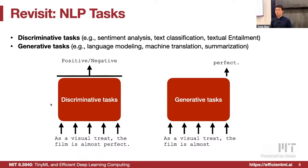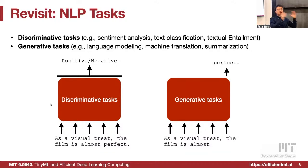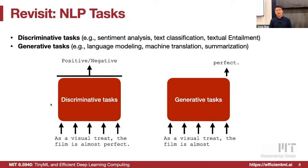Let's first revisit NLP tasks. There are roughly two categories: discriminative tasks and generative tasks. Discriminative tasks take a sentence and produce a classification result, such as sentiment analysis, text classification, and text entailment. Generative tasks take a sentence and generate the next token — this includes language modeling, machine translation, and summarization — all requiring new token generation.